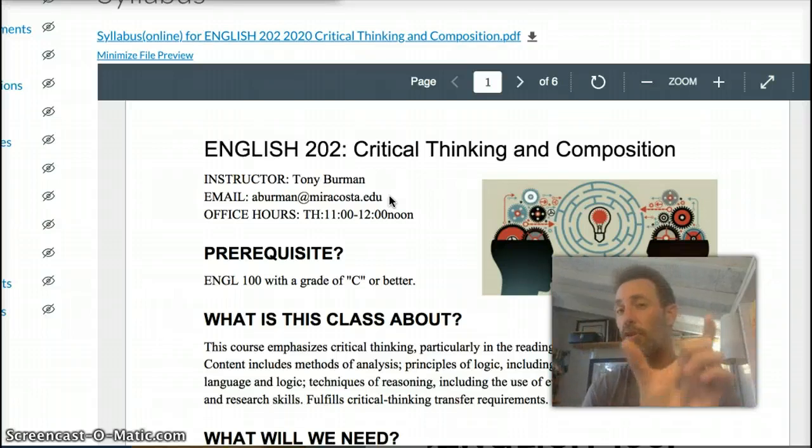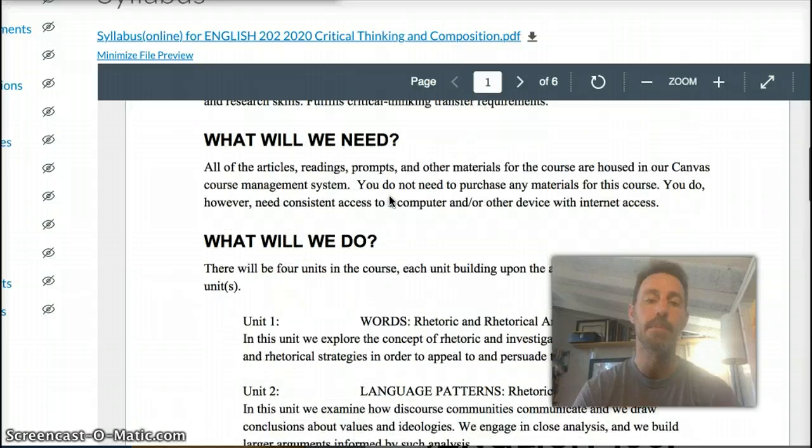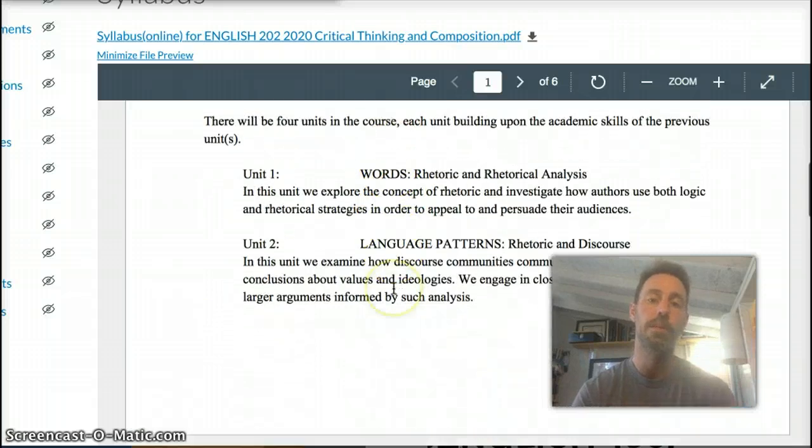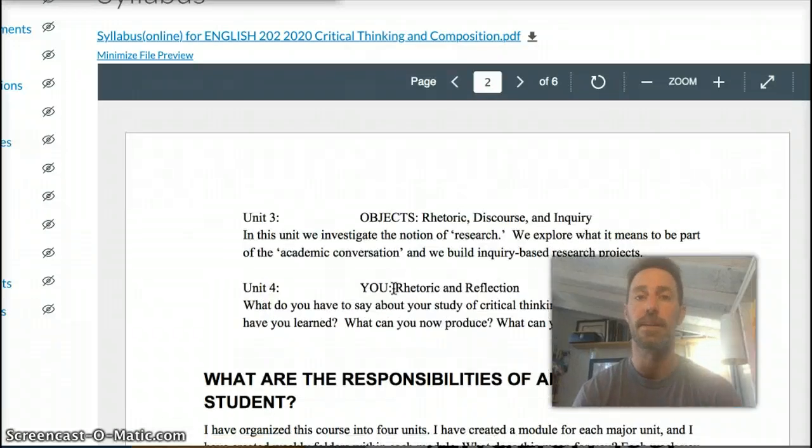And when you see the term critical thinking, for us, for this course, you can translate critical thinking with the term persuasion. And so really what this course is about is analyzing how persuasion works in writing. That's what we'll be doing. We'll be analyzing a ton of texts and investigating how the persuasive qualities of those texts work. So that gives you kind of an overview of where we're headed. If you read the syllabus in detail, you can see that I give you a breakdown of specifically what we'll be doing in each unit. And so feel free to take a look at that.